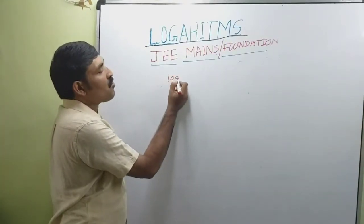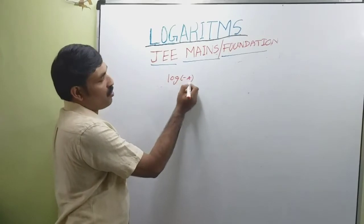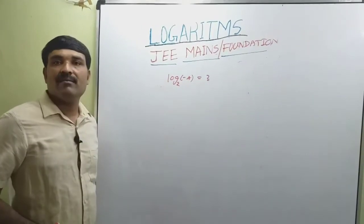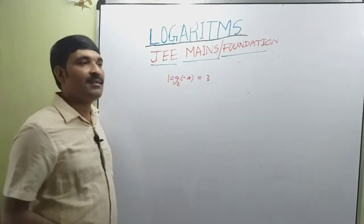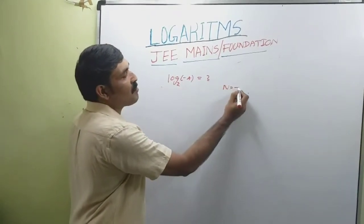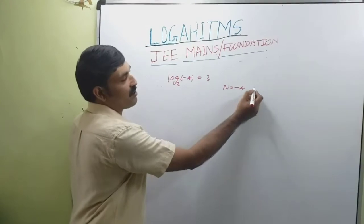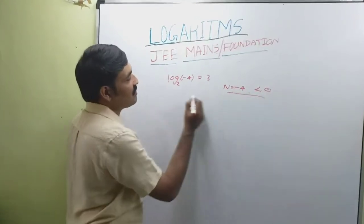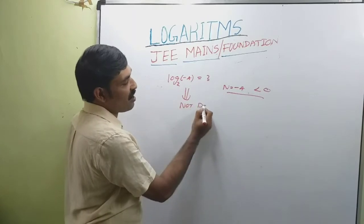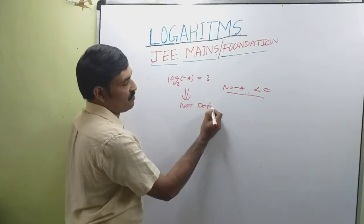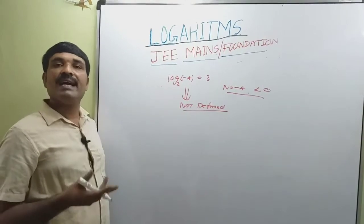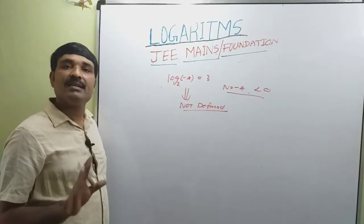Log of -4 to the base 2 is equal to question. Here n is -4, which is less than 0. This indicates the logarithm is not defined. Logarithm of a negative real number is not defined.